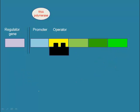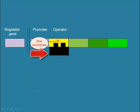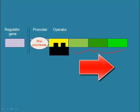The repressor protein binds to the operator. RNA polymerase binds to the promoter, but it's unable to move past the operator because it's being blocked by the repressor. As a result, the genes that code for the enzymes that break down lactose cannot be transcribed.